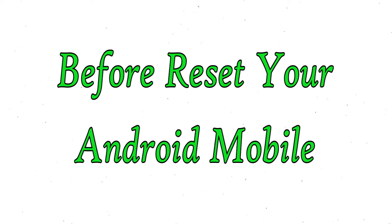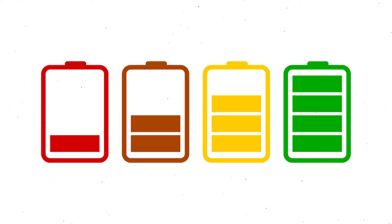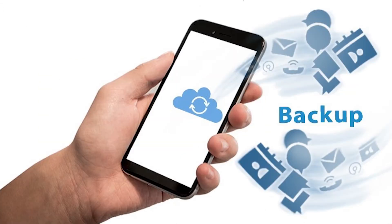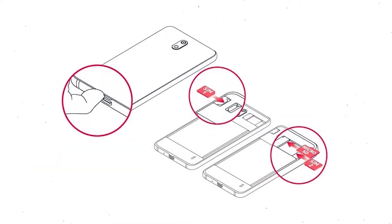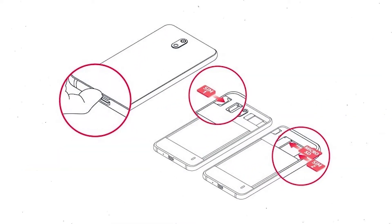Before resetting your mobile, charge your mobile if the battery is less than 50%. You need to make sure that the data on your device is backed up so you do not lose valuable photos or documents. Reset deletes all your mobile data, so you should back up all important data and remove SIMs and SD card.